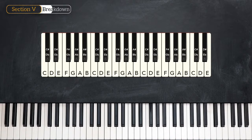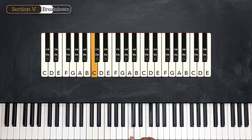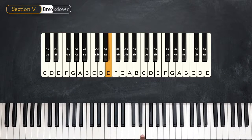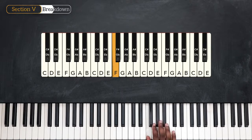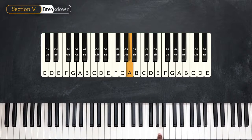Now we're going to quickly talk about the number system. Very simply put, we're going to assign a number to the notes in the scale. For example, in the C major scale, the first note is C, so C is the one. Then we have D, the second note, so D is the two. E is three, F is four, G is the five, A is six, and B is seven.